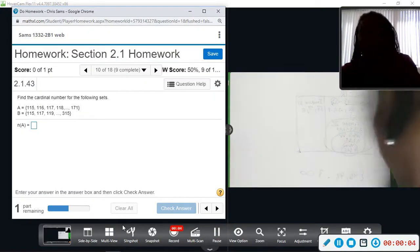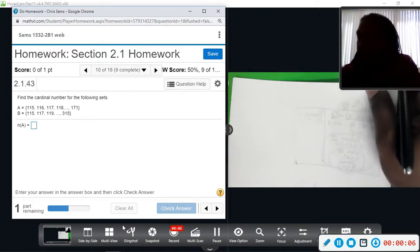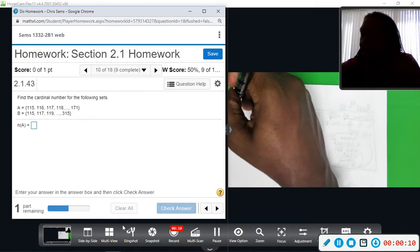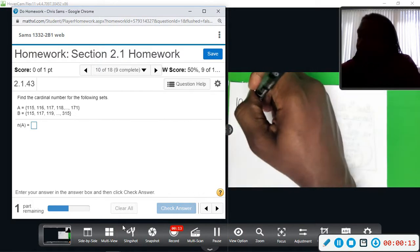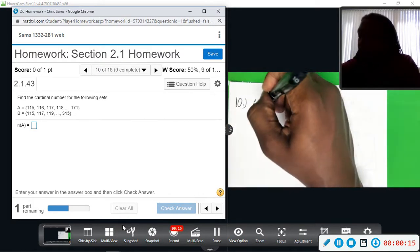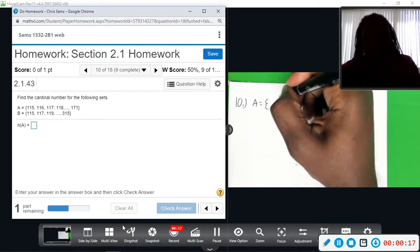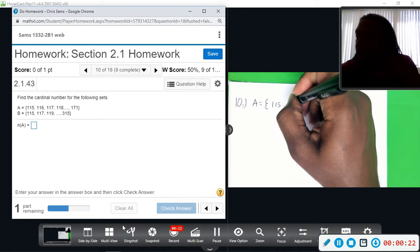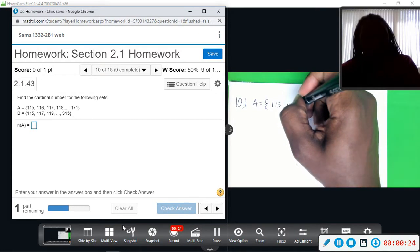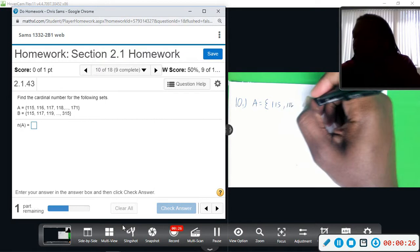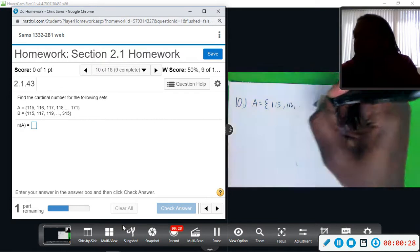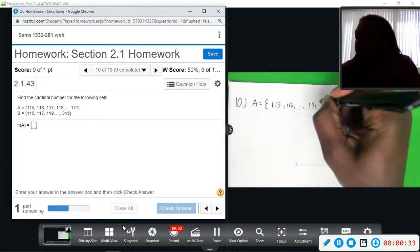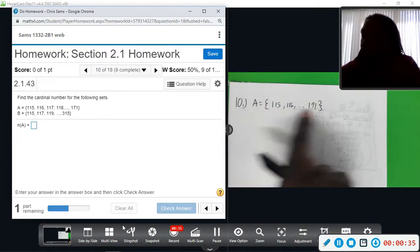All right, number 10. We want to find the cardinal numbers of the two given sets. So we have A is the set 115, 116, 117, dot dot dot. All right, I'm going to be lazy. And we stop at 171. Okay, so we need to figure out how many elements are in this set.